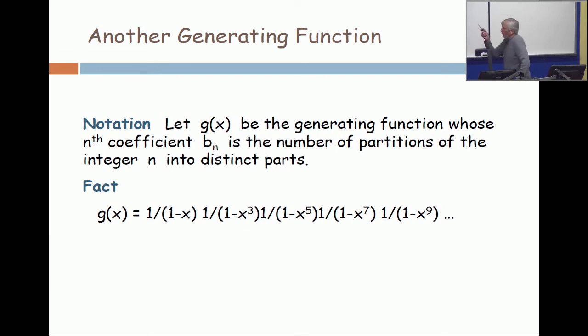All right, pick one of those terms, like the 1 over x to the seventh. Now, let's use geometric series. What is 1 over 1 minus x to the seventh? 1 over 1 minus ratio. Answer, 1 plus x to the seventh, plus x to the fourteenth, plus x to the twenty-one, x to the twenty-eight, x to the thirty-five, x to the forty-second, etc. Just the exponents are multiples of seven.